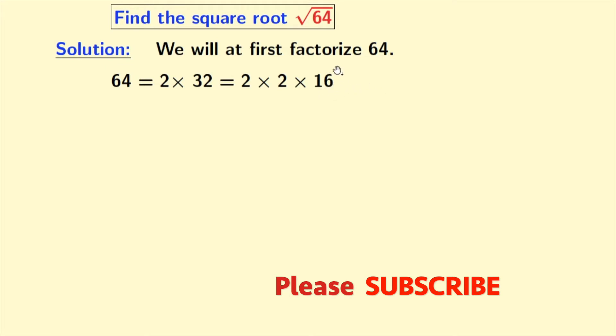Now, look that 16 is a perfect square which is a square of 4. And again, look that here we have 2 times 2 which is 4. And that is also a perfect square. So, we will rewrite 64 as 4 times 16 where 4 and 16 are perfect squares.